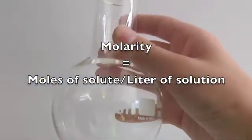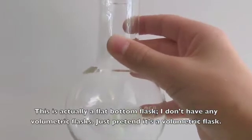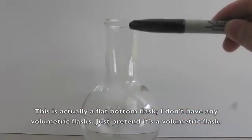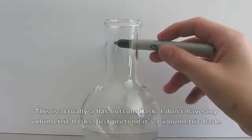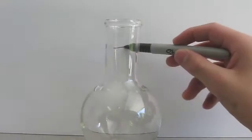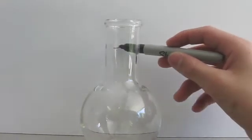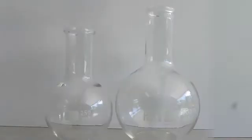The standard laboratory practice is to use a volumetric flask. This is similar to a flat bottom flask, except that it has a thinner and taller neck and a line on the neck. This line is where the bottom of the meniscus should be when you have finished making up your solution. These flasks come in different sizes so that you can make different volumes of solution.